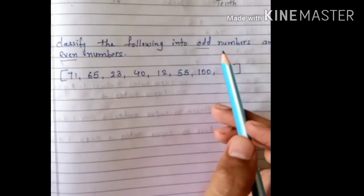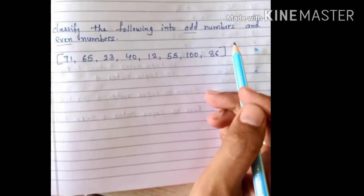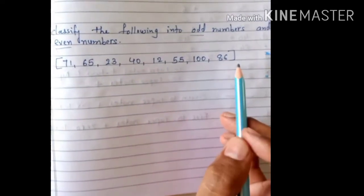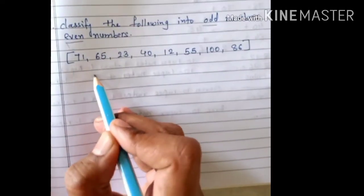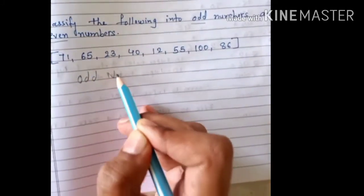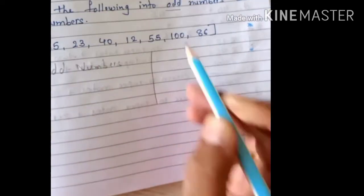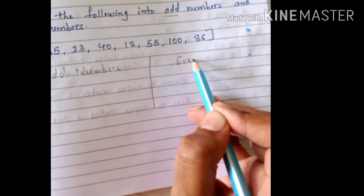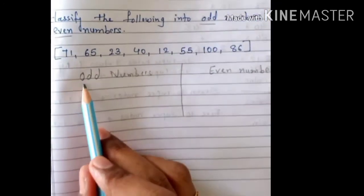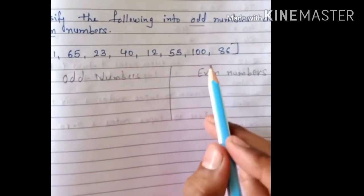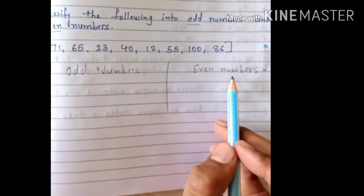So, we have to find odd and even numbers. We have so many numbers here which we need to write under odd and even. I'll make two columns here — odd numbers on one side and even numbers on the other side. O-D-D is 'odd' and E-V-E-N is 'even'. Everyone knows the spelling of numbers, right students?